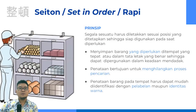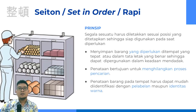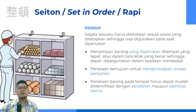S yang kedua, yaitu Seiton atau Set in Order, dalam bahasa Indonesia berarti Rapi. Prinsipnya adalah segala sesuatu harus diletakkan sesuai posisi yang ditetapkan sehingga siap digunakan saat diperlukan. Rapi berarti kita menyimpan barang yang diperlukan di tempat yang tepat atau dalam tata letak yang benar sehingga dapat digunakan dalam keadaan mendadak. Proses Rapi ini melakukan penataan yang bertujuan untuk menghilangkan proses pencarian. Oleh karena itu, dalam penataan barang pada tempat harus dapat mudah diidentifikasi, misalnya dengan memberikan label ataupun menggunakan warna yang menyaratkan kode ataupun keterangan tertentu.